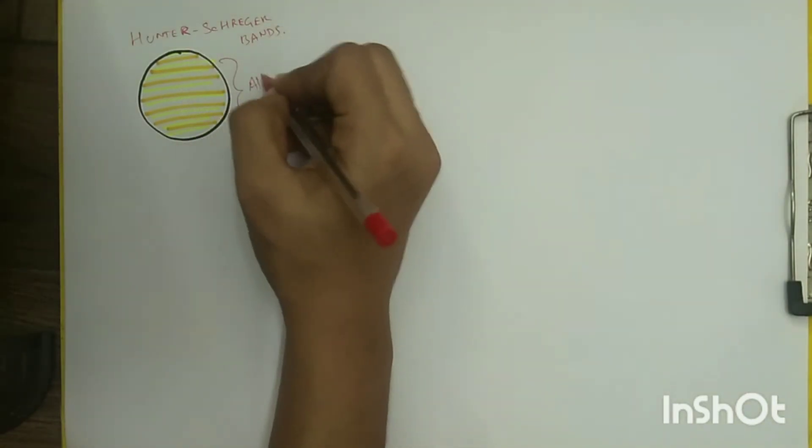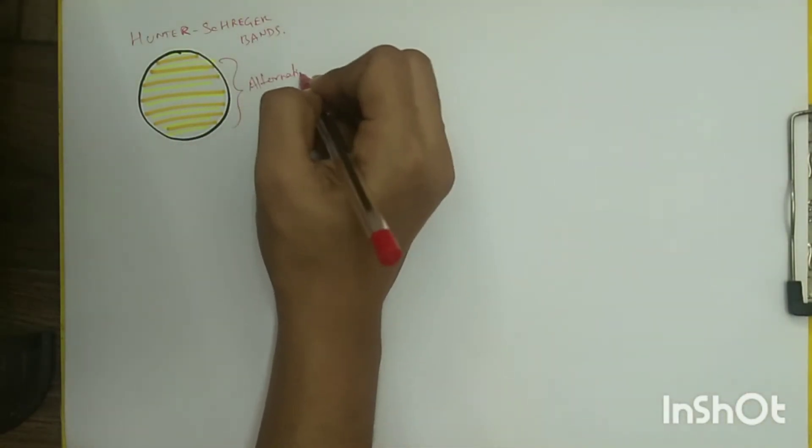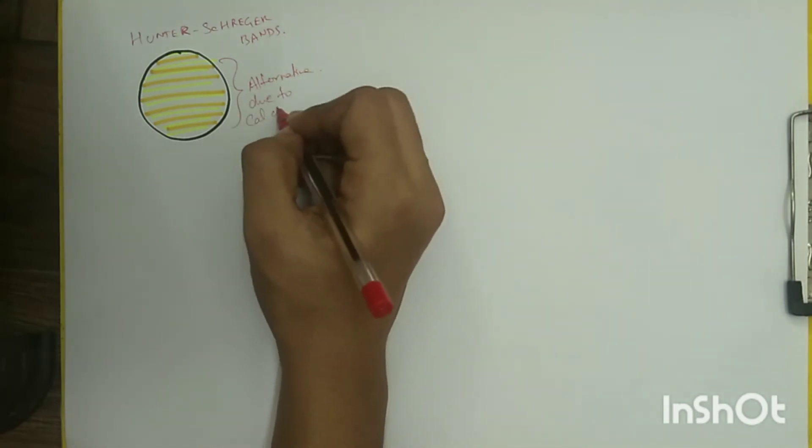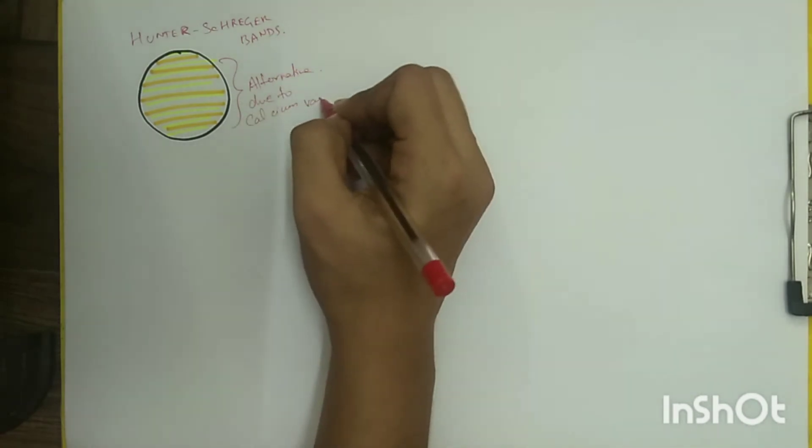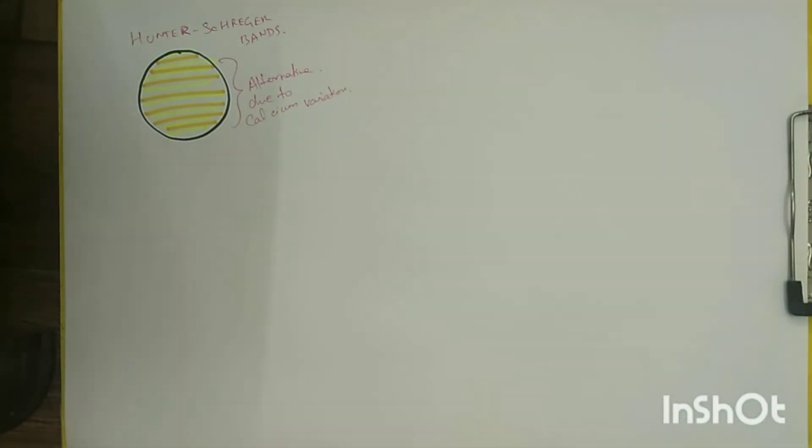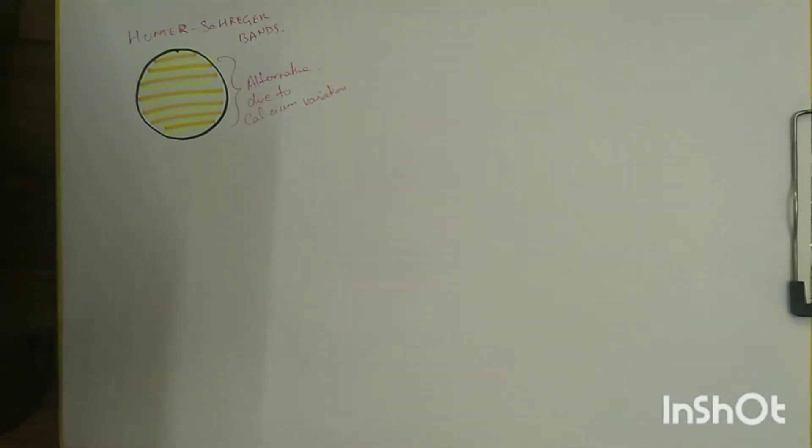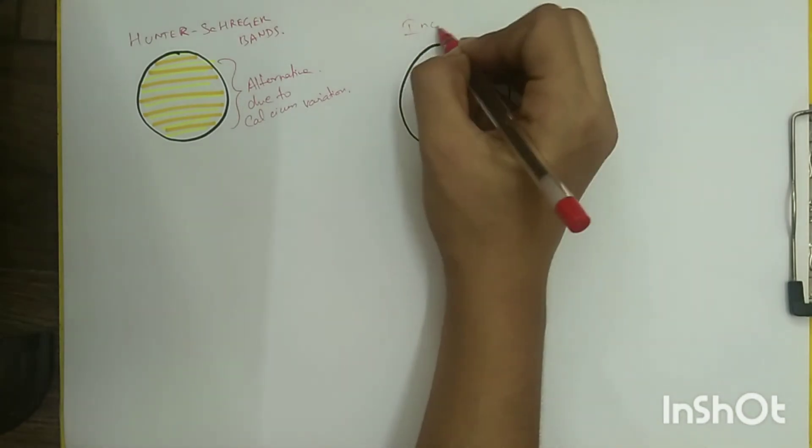It has been suggested that these alternating light and dark bands may represent portions of enamel having variations in calcification, differing slightly in their permeability, or having different organic material content.